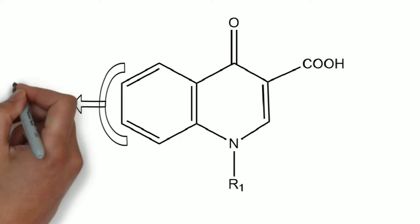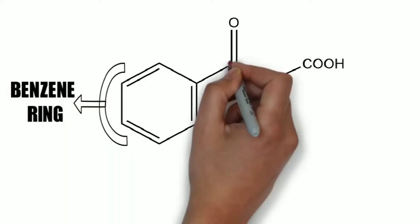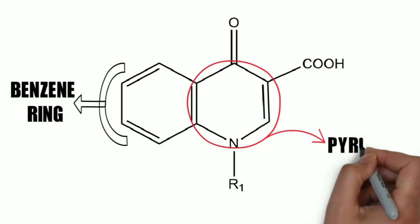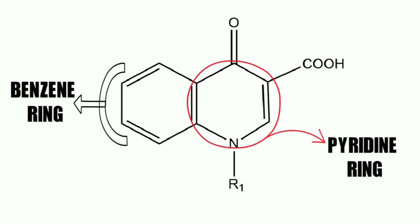Before discussing the point of modification and its effect on the activity, let's have a look over its structure. If we see the structure, it is composed of benzene ring and pyridine ring. If I want to number the ring, we'll start from the heterocyclic atom, that is nitrogen atom: 1, 2, 3, 4, 5, and 6.